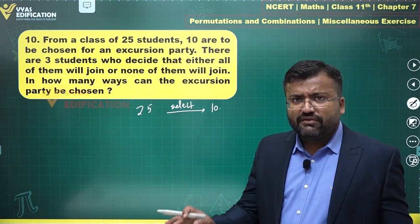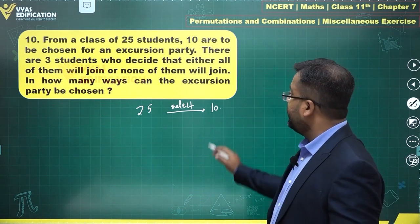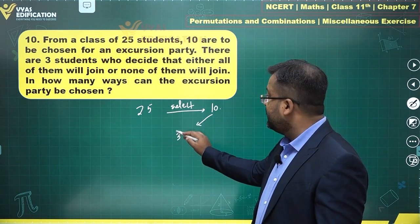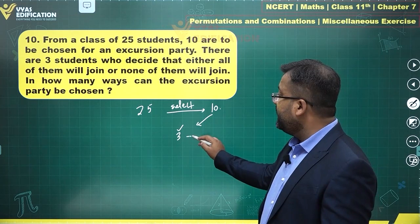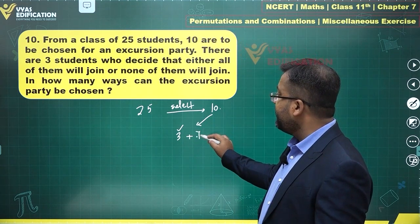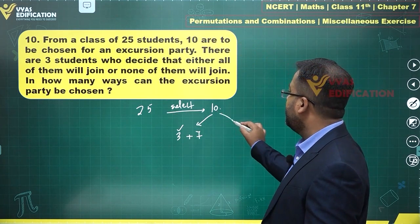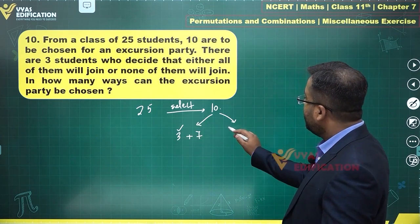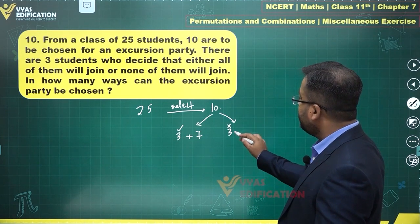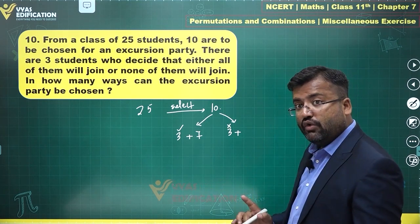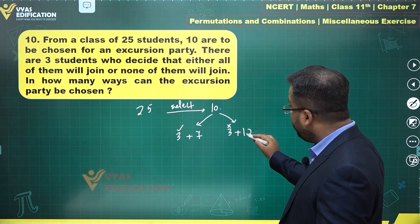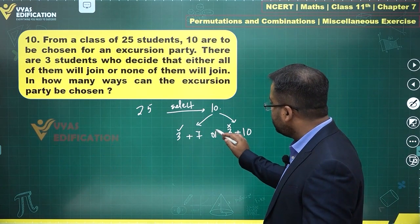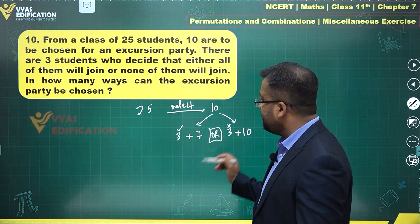There will be two separate ways of selecting this party of 10. First case: those three are surely selected — three are in, and you need an additional seven from the remaining students. Second case: three are out, and you need all 10 from the remaining students. This case is separate, and that case is separate.